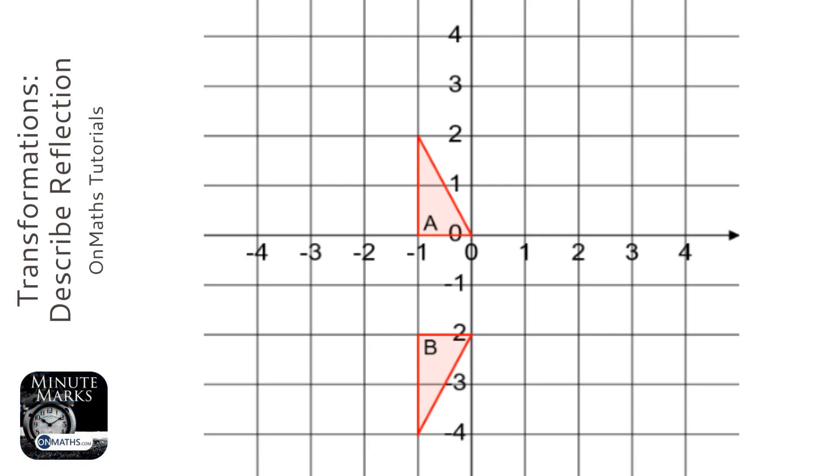Thirdly, has it been rotated at all? Now if you think about that, it looks like it has been rotated, but if I draw A upside down it would be like this, and so it won't look like B. So it's not been rotated.